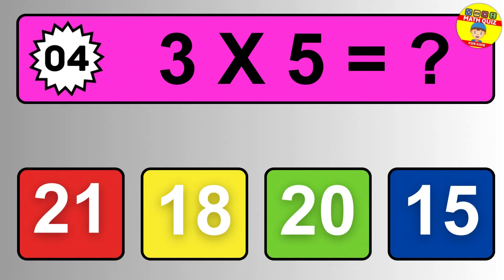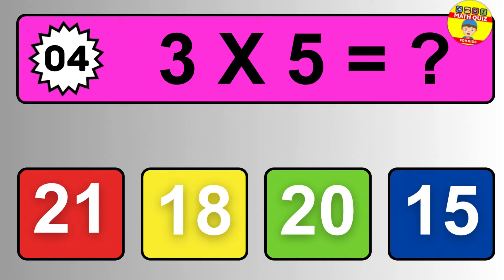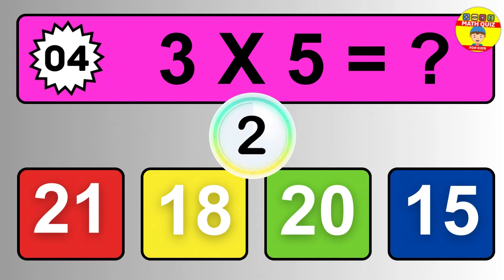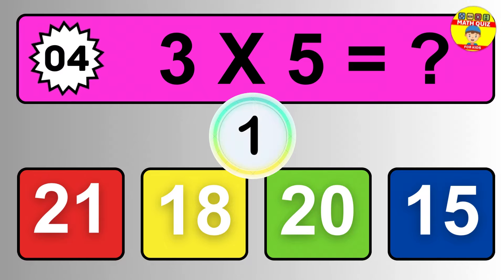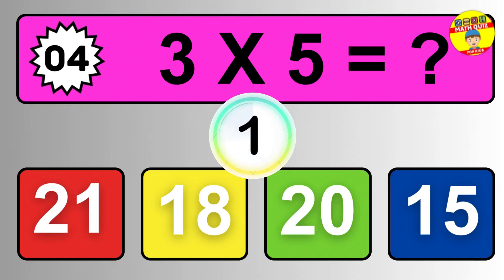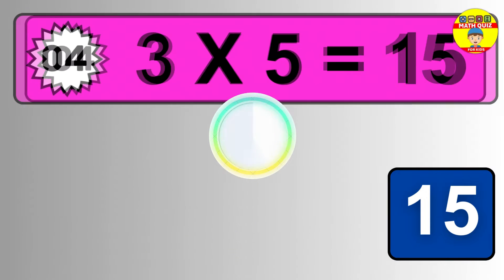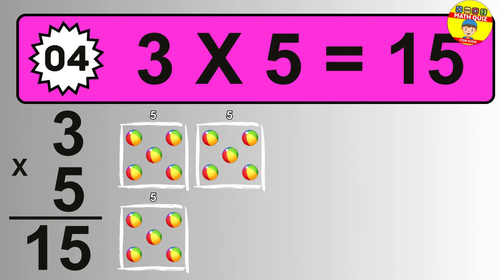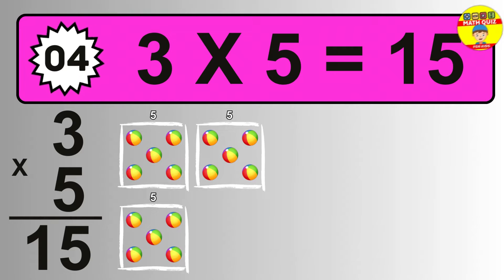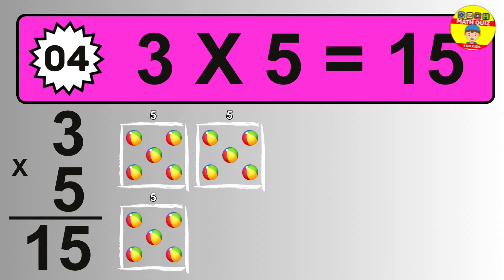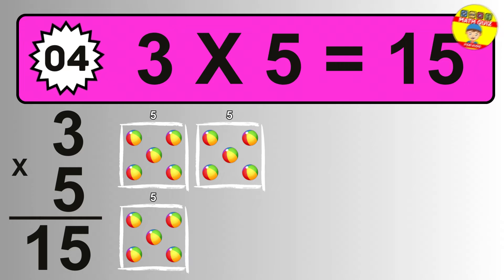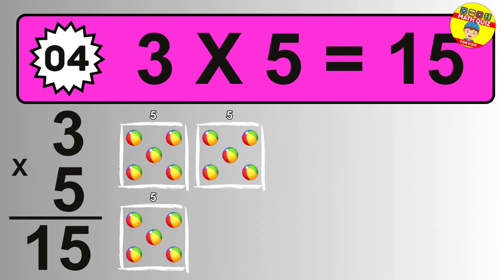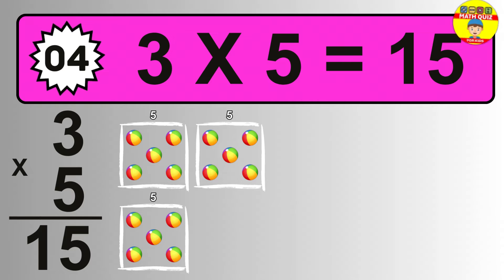Question four. Three times five equals what? The answer is three times five is 15. To calculate, we have three groups with five balls each one. So how many balls do we have? Fifteen balls.